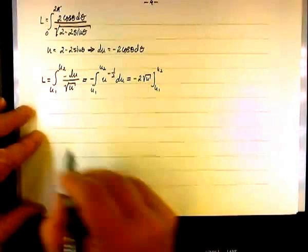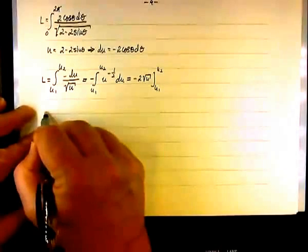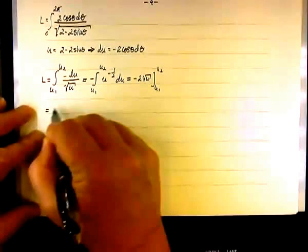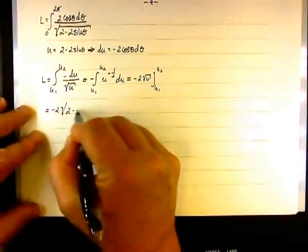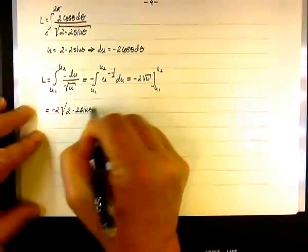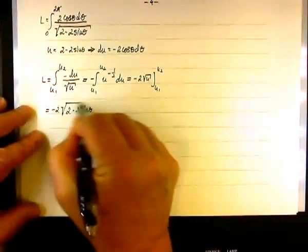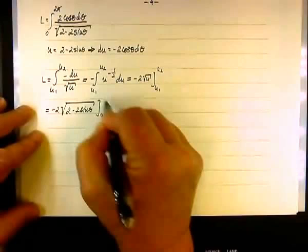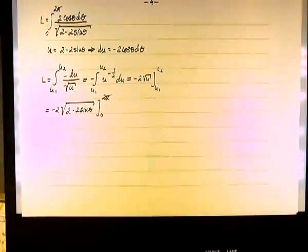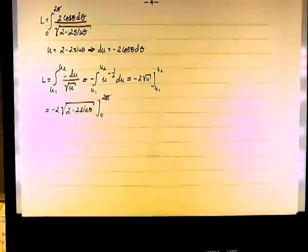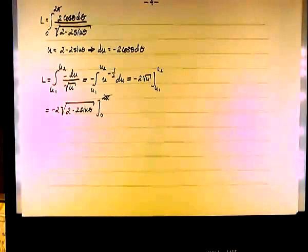Bringing back theta, with u equal to 2 minus 2 sine theta, we have negative 2 times the square root of 2 minus 2 sine theta, evaluated from 0 to 2 pi.